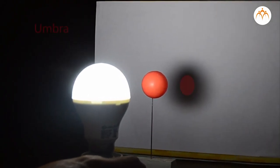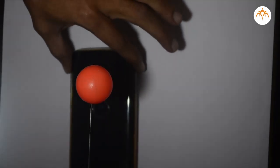This changes the nature of the shadow. There is a region where the shadow is very dark. This is called umbra.